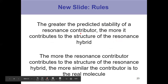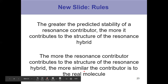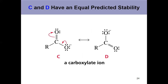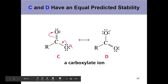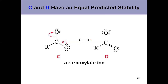The greater the stability of a contributor, the more it contributes to the hybrid — therefore, the more similar the real molecule is to that contributor. For the carboxylate ion, there's no difference between the two resonance contributors C and D. In both cases, I have just a single negative charge on two different oxygens. These are completely equal to one another, so the resonance hybrid is 50% of both of these.